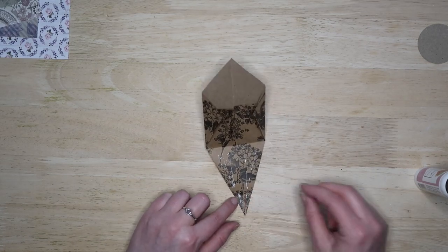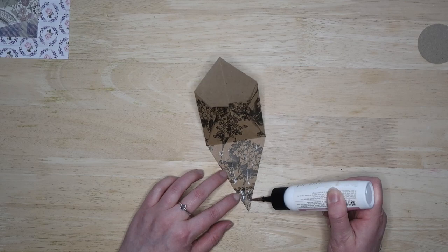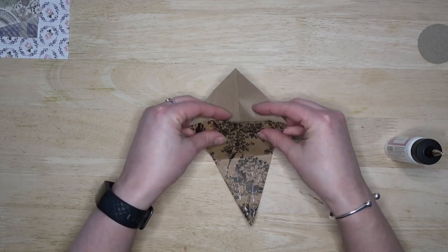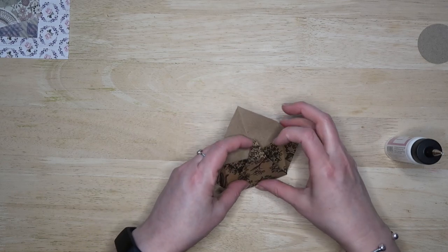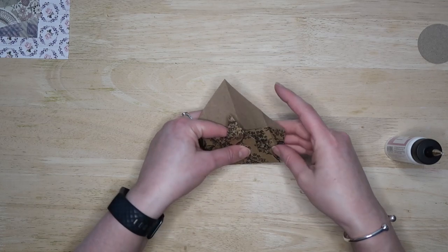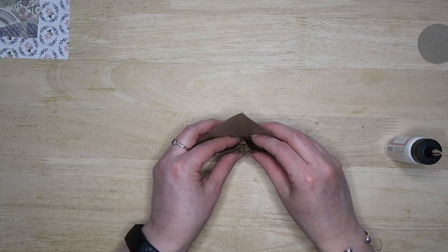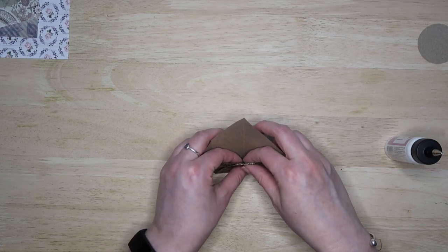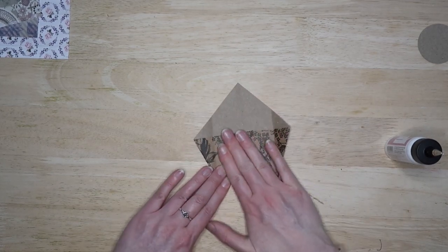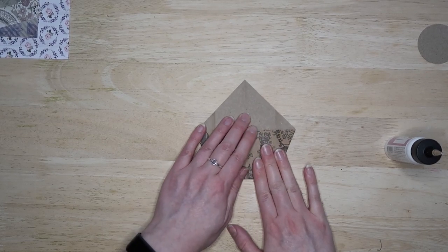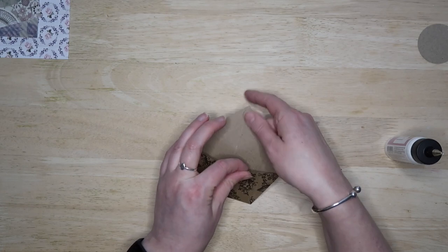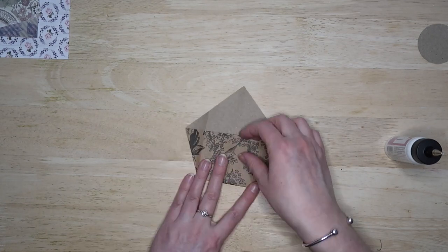But I'm going to just pop some on that tip there as well. This you'll have to be careful with when you fold it round because you don't want to end up sticking it to the back. So you could always pop something inside to make sure that it doesn't stick down. But by some miracle I've managed to do it there.